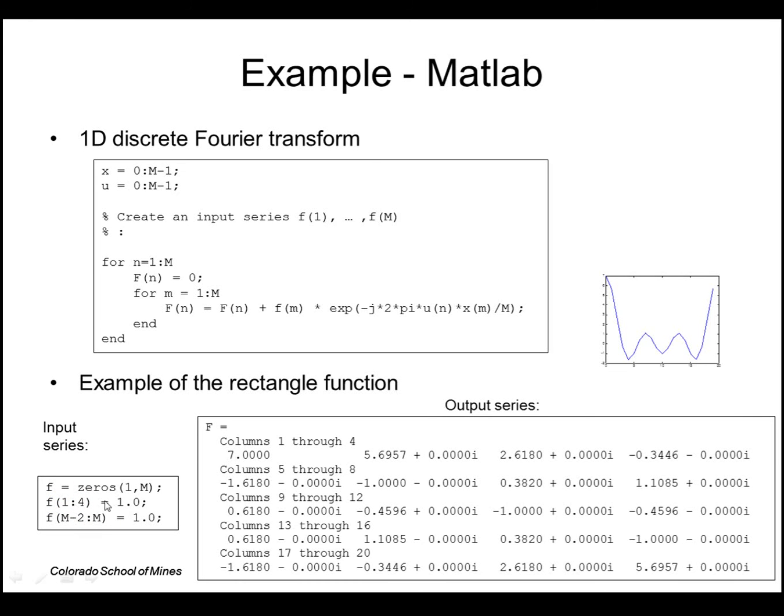Then the output transform is this series of complex numbers. Note that it's basically all the imaginary parts are zero. So that's a special property of the rectangle function. And if you plot these real values, you get what looks like a sinc. And remember that it's periodic, so this piece is repeated over here. So centered around zero, it's a sinc.